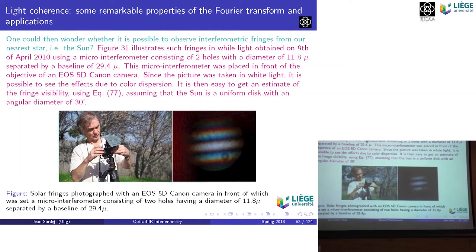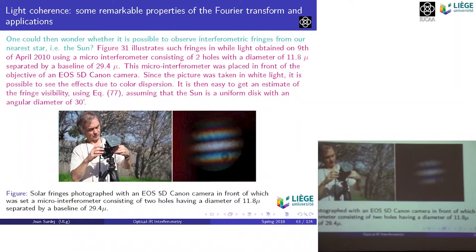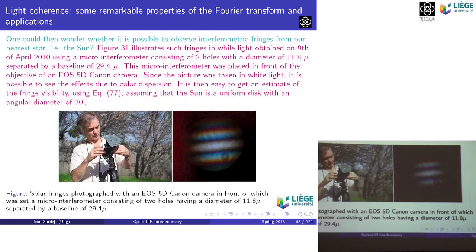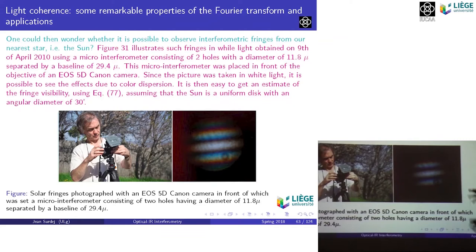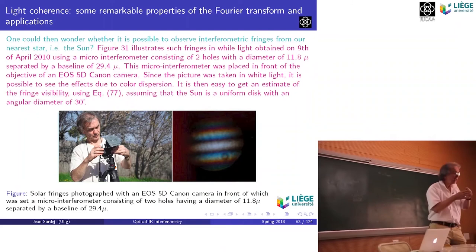Looking at the fringe image: this is the fringe for n=0, this is n=1, n=-1, and you can see the dispersion of light — blue, green, red, etc. This is because we are not working with a filter in front of the camera; we work in white light. And this is what we expect — a spectral dispersion of the fringes.